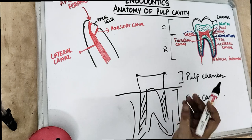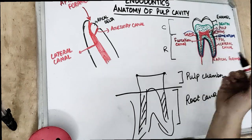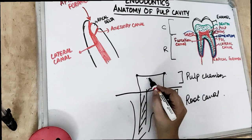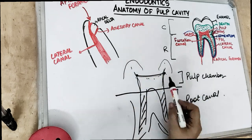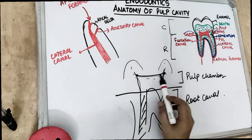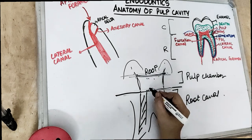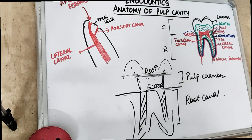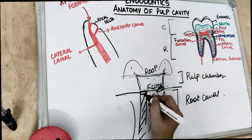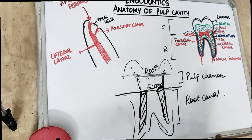The pulp horns are an accentuation of the pulp chamber which lie under the cusp. As you can see, this is the cusp, and under the cusp there is a little extension of the pulp chamber, which is known as the pulp horn. We also have the roof — the upper part — and the floor — the lower part of the pulp chamber — as well as canal orifices, which are the openings from which the root canal starts.